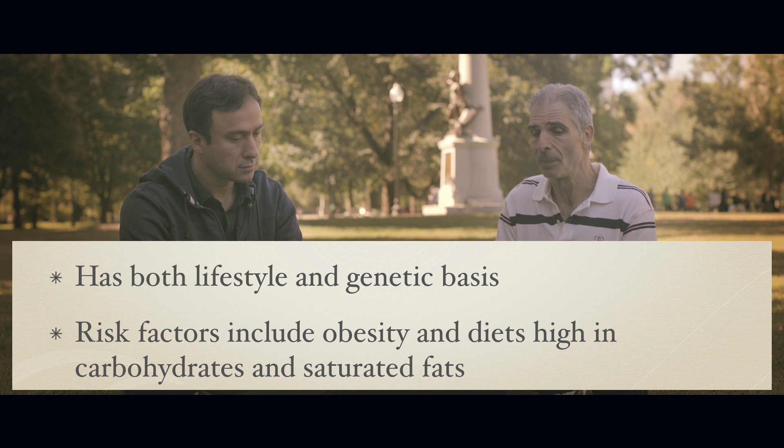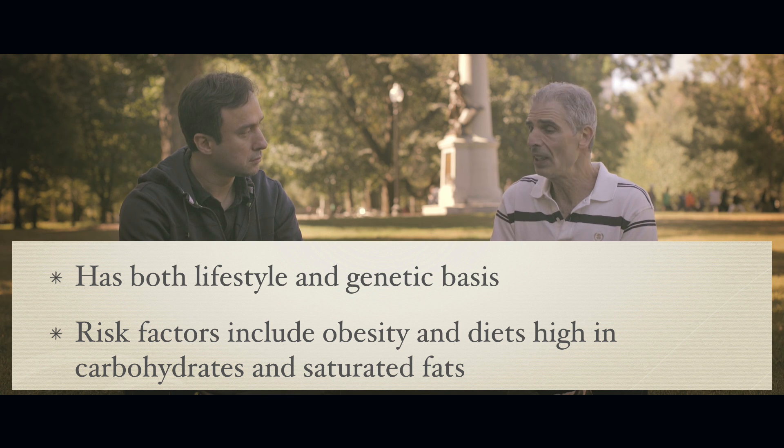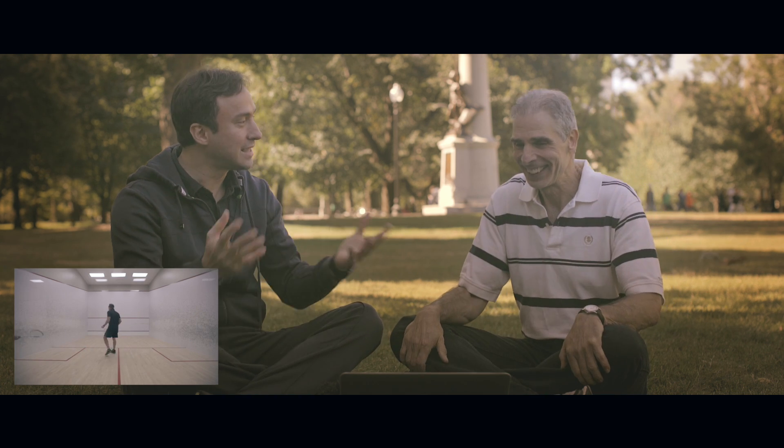Type 2 diabetes usually comes on later in life and is associated not so much with insulin drop, but with the inability of receptor cells to respond to insulin. It has both a lifestyle and genetic basis, with risk factors including obesity and diets high in carbohydrates and saturated fats. A healthy lifestyle and lots of exercise are important for managing this type. Gestational diabetes occurs during pregnancy, is transient, very similar to type 2, and tends to disappear postpartum.